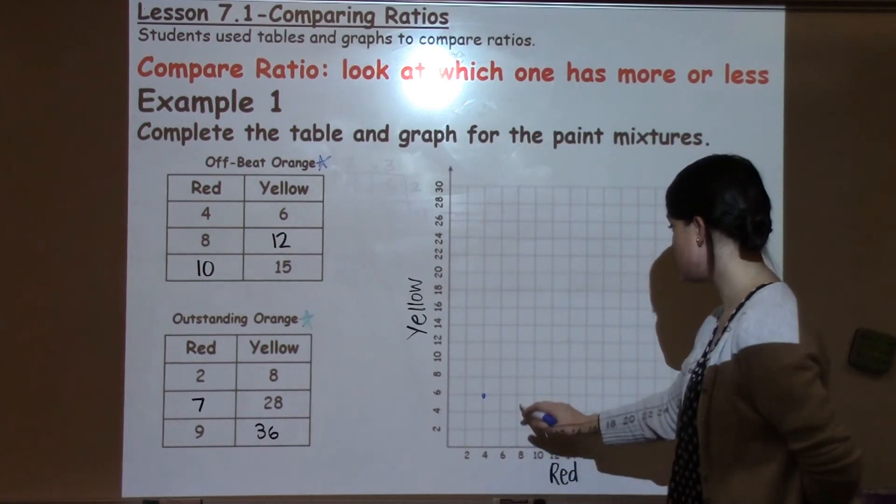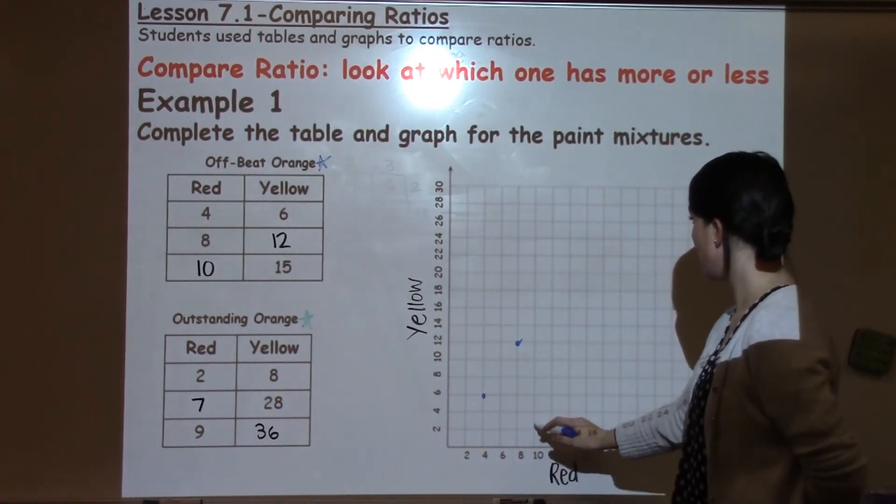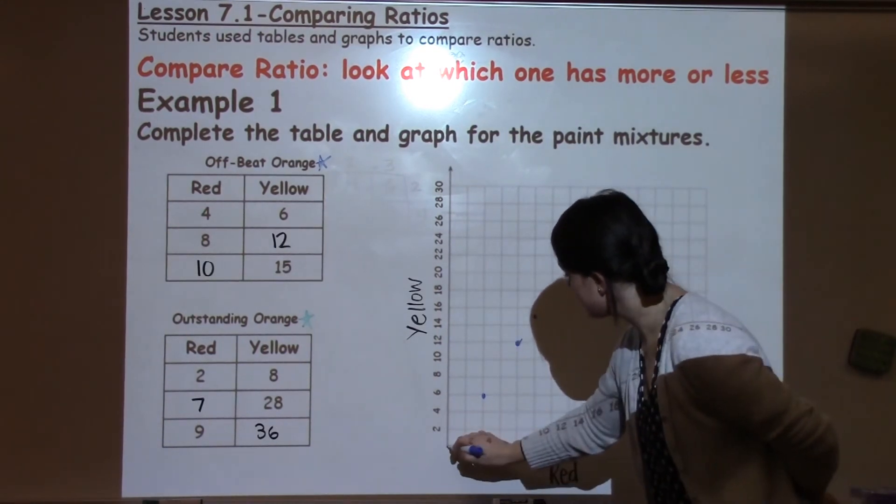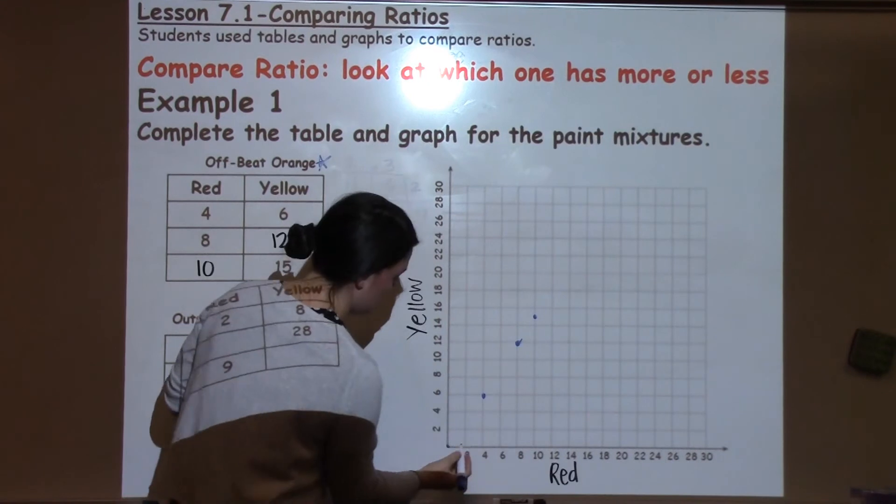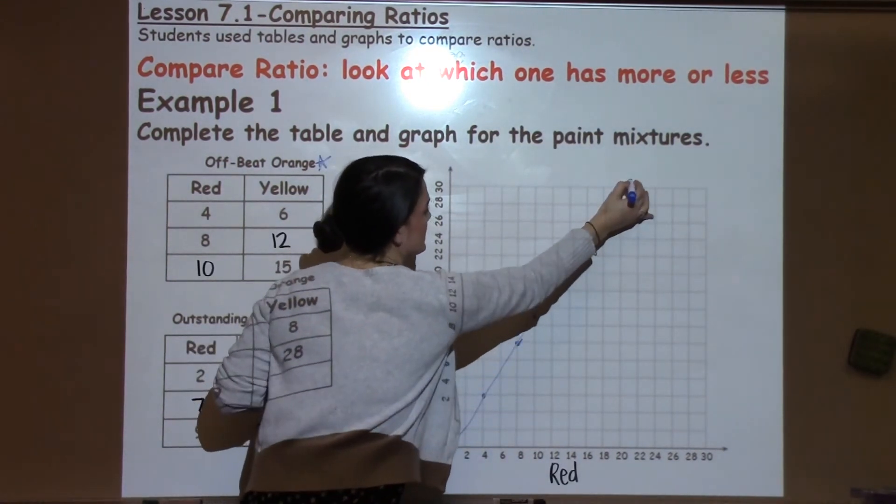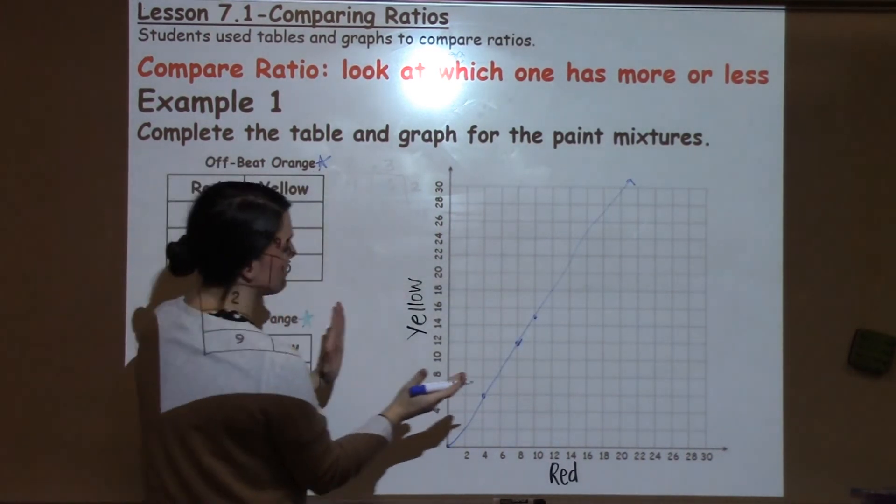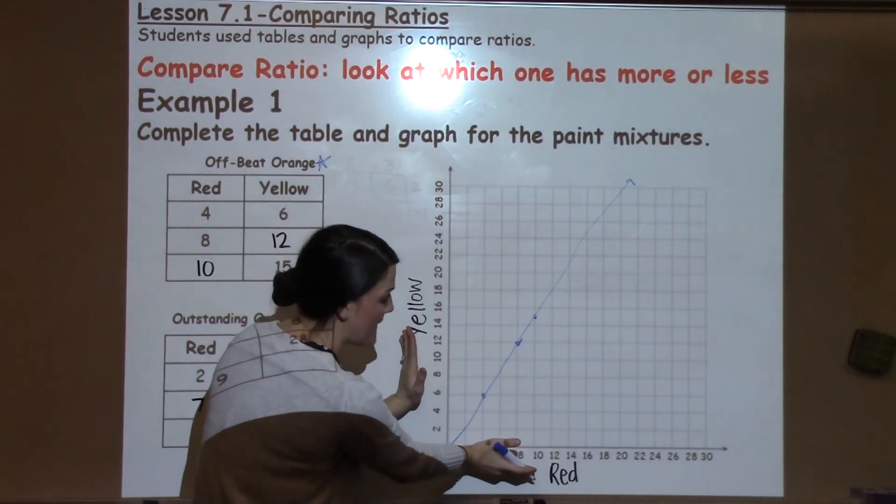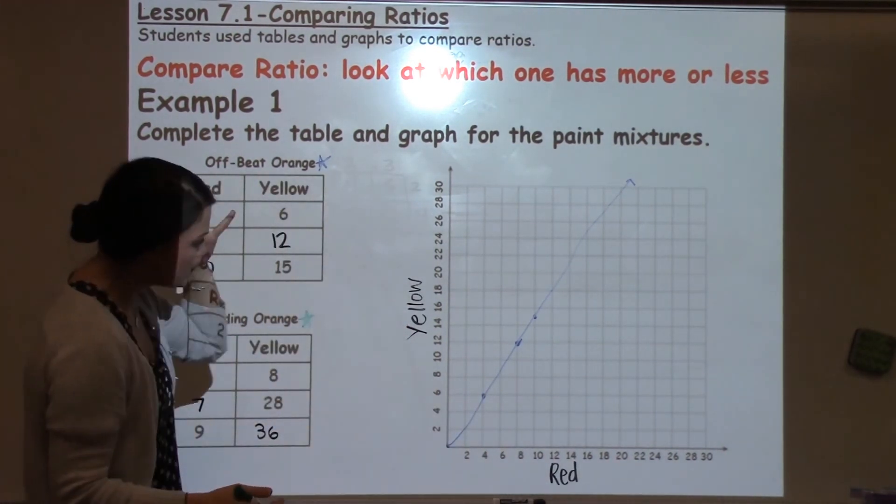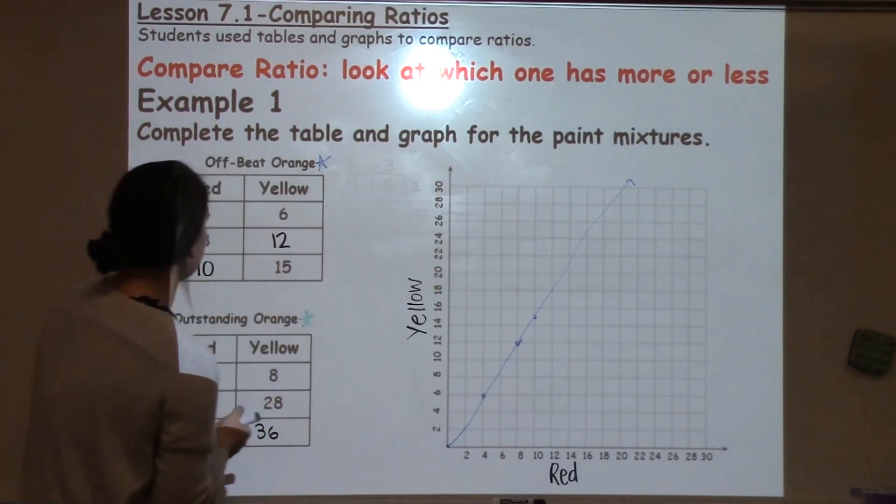Over 8, up 12 is my next number. Over 10, up 15, and then I'm going to connect my dots through 0, 0 as straight as I can to create a visual line showing offbeat orange in comparison to red and yellow paint with the ratio there. So that's kind of giving me a nice visual about how much red to yellow is that offbeat orange paint.